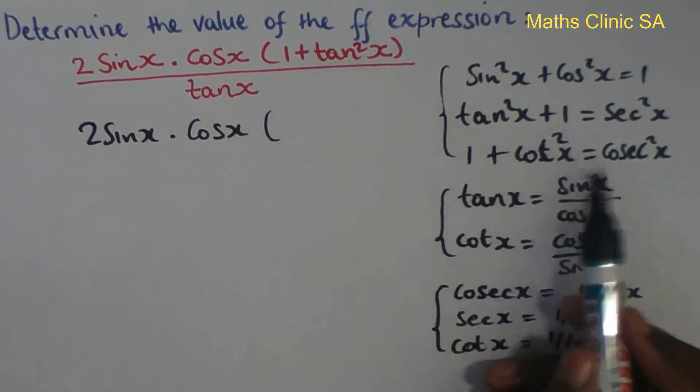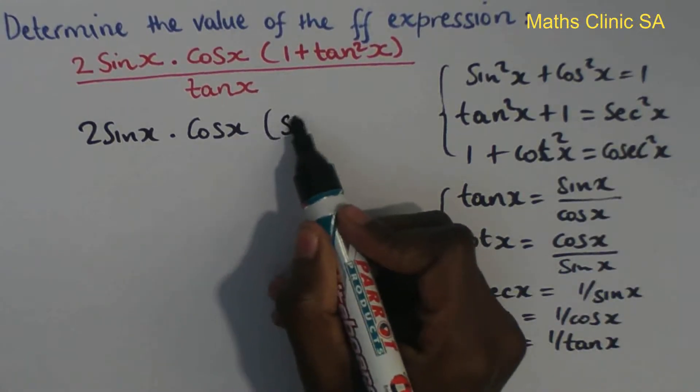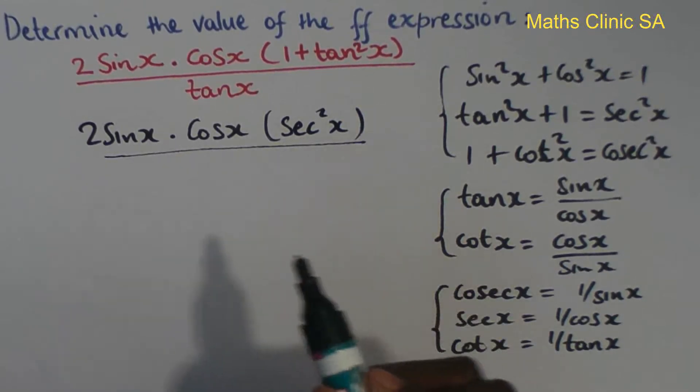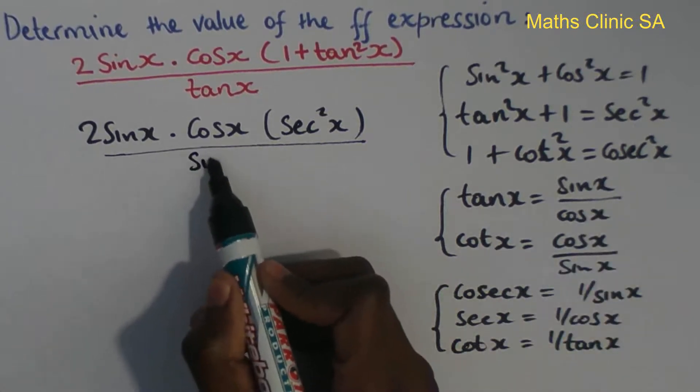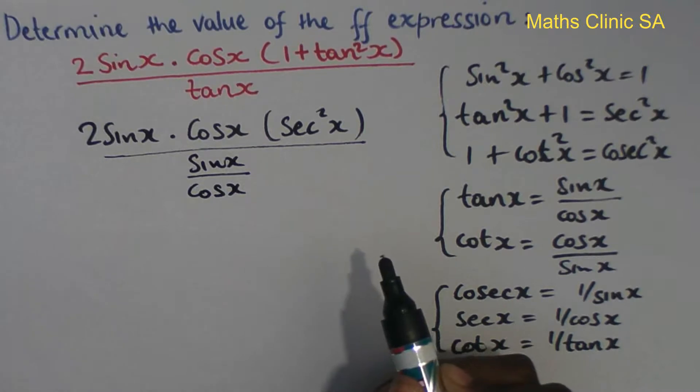So now let's solve this question using these identities. 1 plus tan squared x, from the Pythagorean squared identity, is sec squared x. So we have sec squared x divided by tan x.